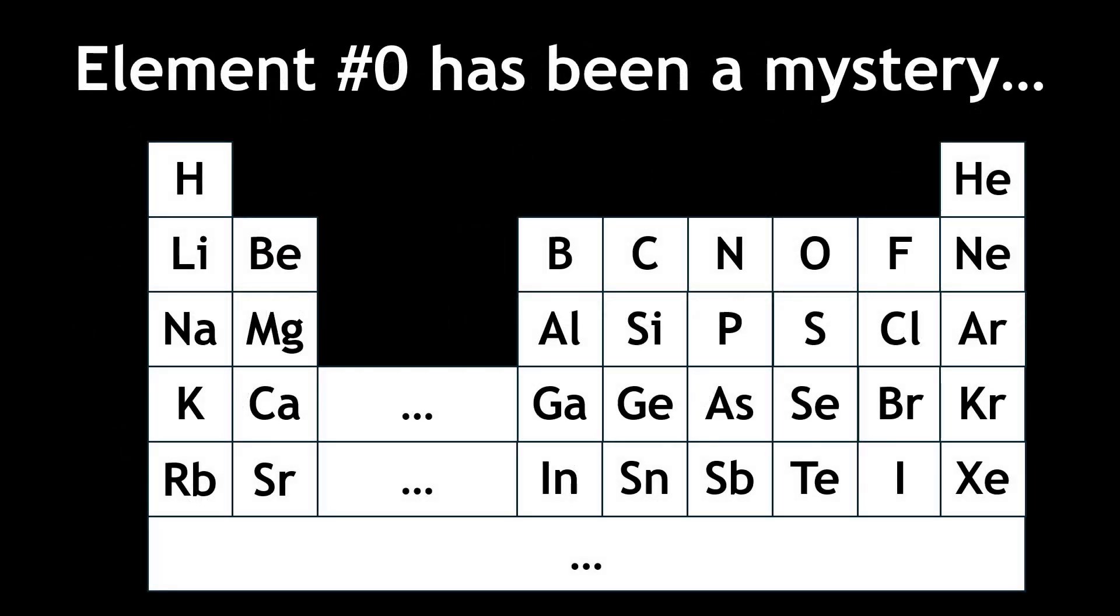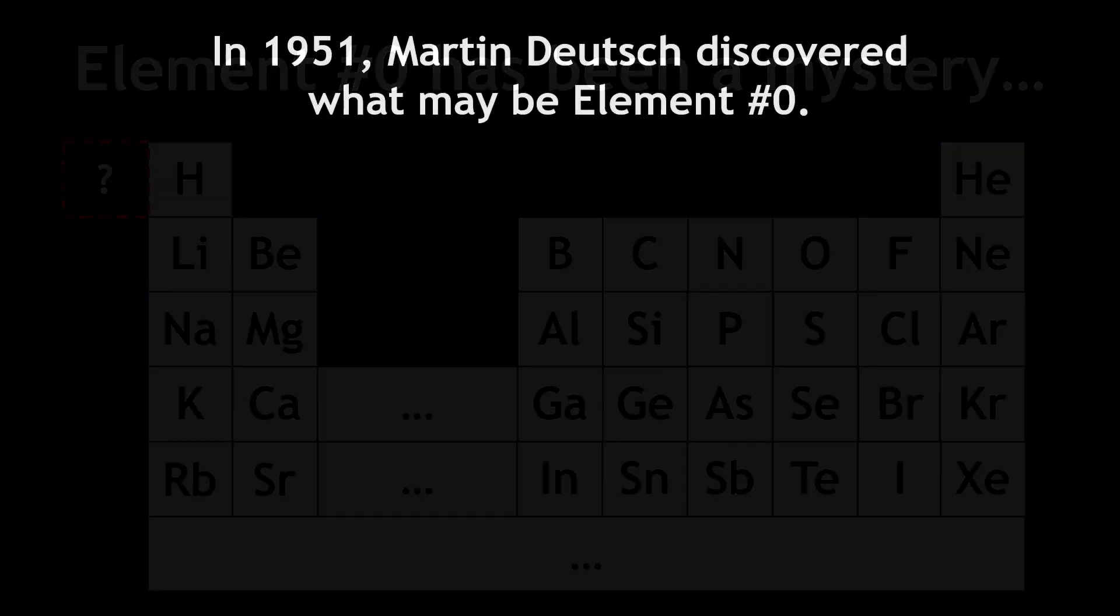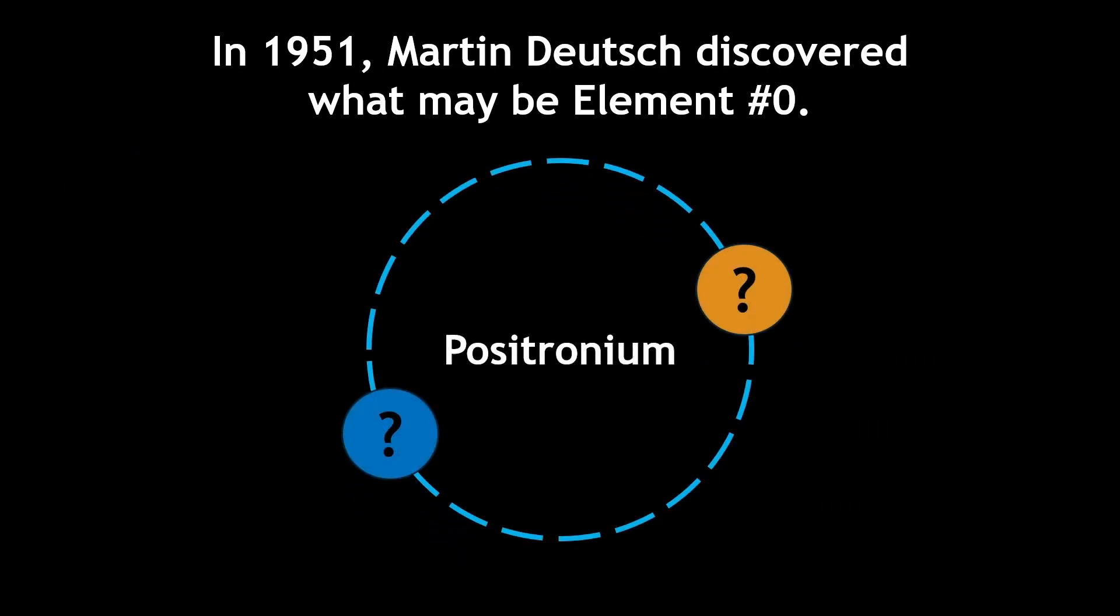The concept of element zero has been a mystery to scientists for decades, but in 1951, Martin Deutsch may have discovered the answer. It's called positronium, and it may be the element zero that scientists have been searching for.